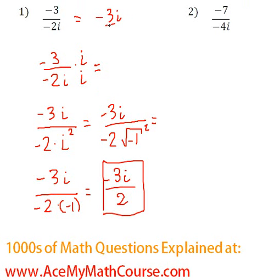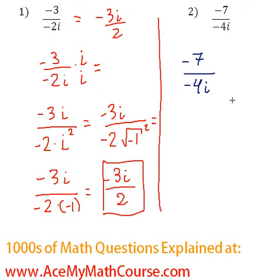Then how about number 2? Here we have negative 7 over negative 4i. Again, I'm going to multiply top and bottom by i. Negative 7i all over negative 4i times i will be again i squared.